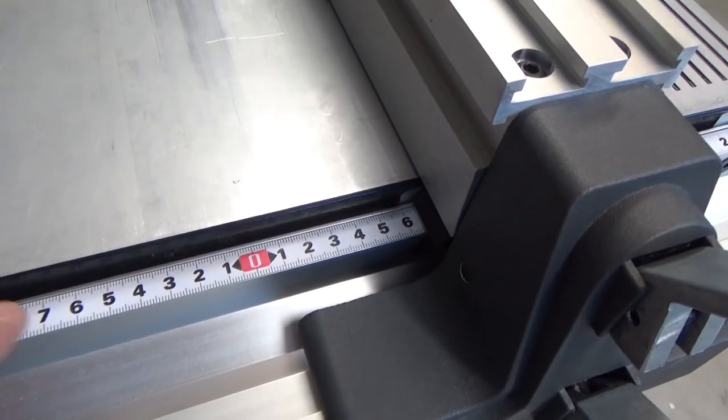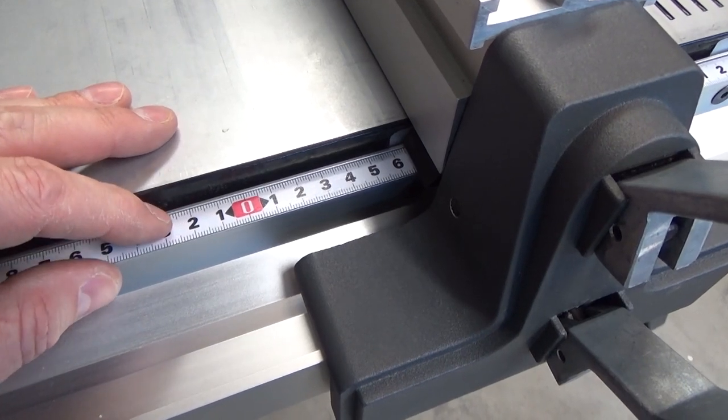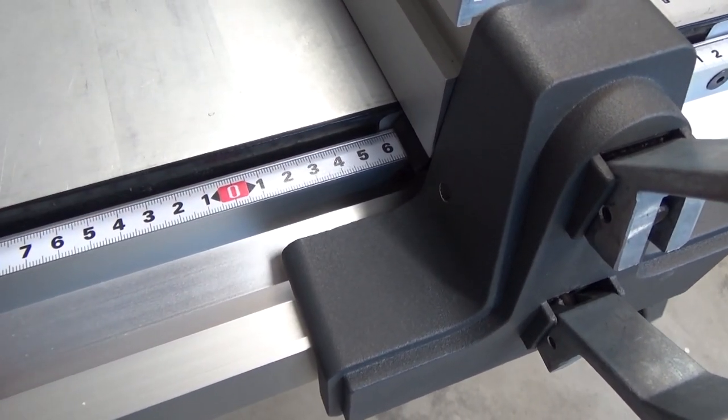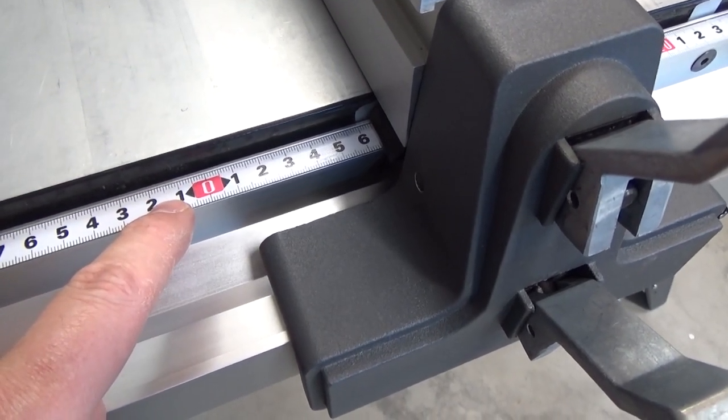This is a metric steel ruler. Originally, it was an adhesive back system, and I just scraped off all the adhesive. It's not as nice as the ShopSmith ruler, but I do like to work in metric whenever I can. Now I have the option to set up my fence in metric units.